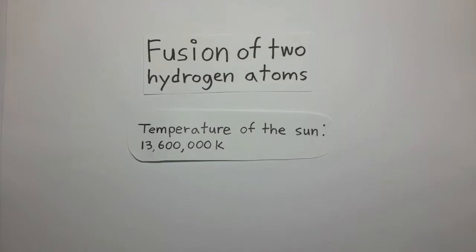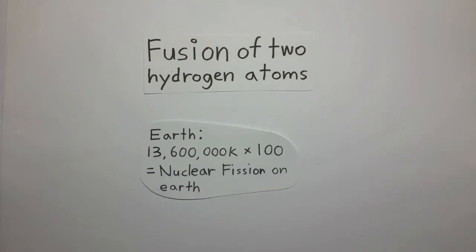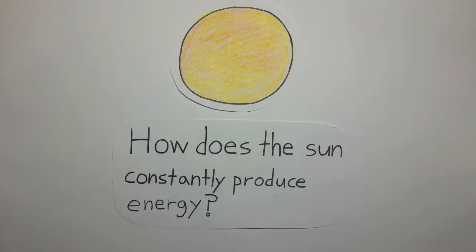The sun's temperature is approximately 13,600,000 Kelvin, and on earth, we need to raise it to about 1,360,000,000 Kelvin. So how does the sun constantly produce energy?